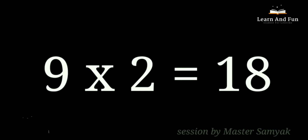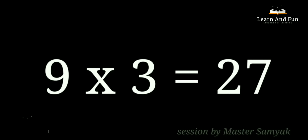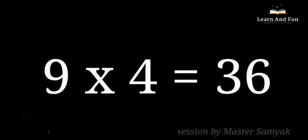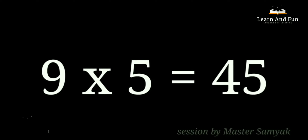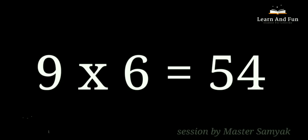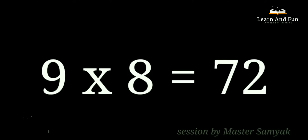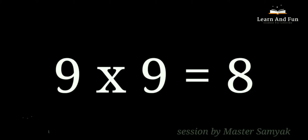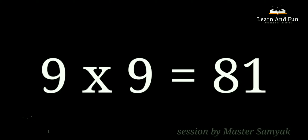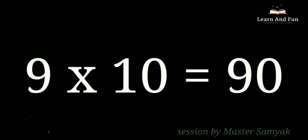Multiplication Table of 9. 9 ones are 9. 9 twos are 18. 9 threes are 27. 9 fours are 36. 9 fives are 45. 9 sixes are 54. 9 sevens are 63. 9 eights are 72. 9 nines are 81. 9 tens are 90.